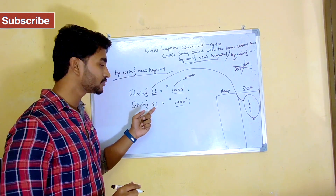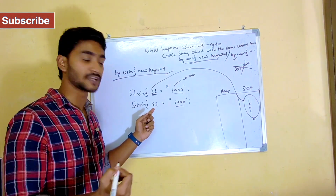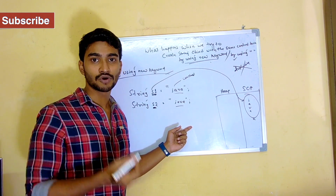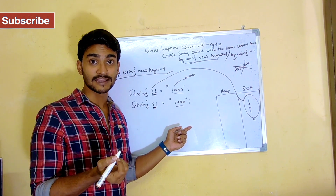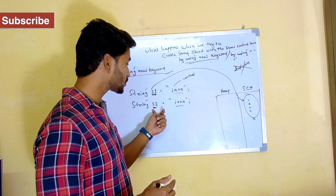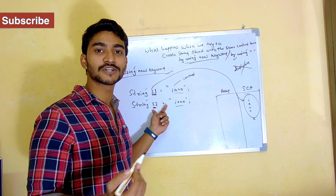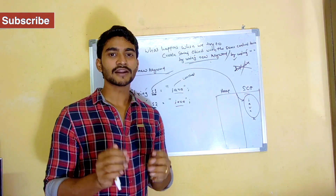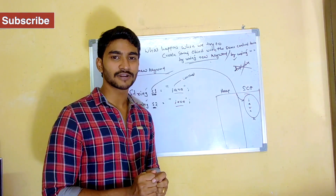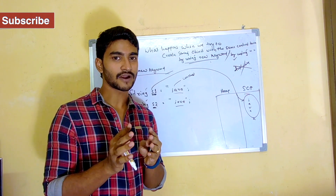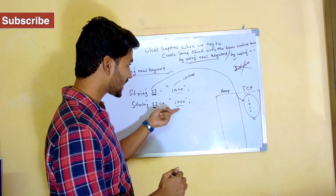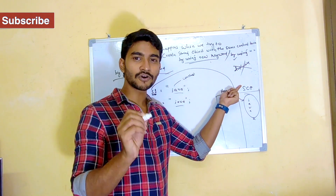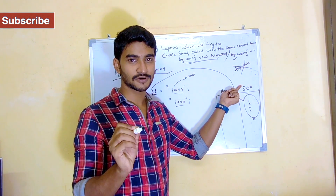Next, I'm creating another object called S2 with the same content. What will happen in this case? Do you think JVM is going to create another object 'Java' inside the string constant pool? Before you answer, just remember what I said: the string constant pool never allows duplicate objects.